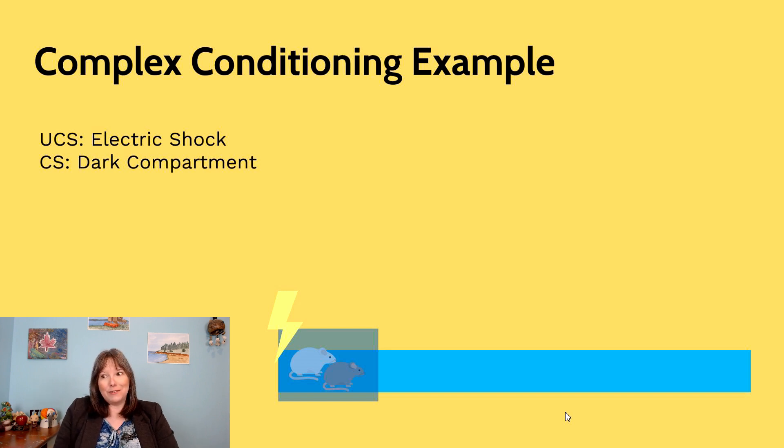And so now by pairing the shock with the dark compartment, that's classical conditioning. They're going to receive a shock there, they're going to map that on, and the dark compartment will no longer be neutral. It'll now be a conditioned stimulus. The rats are not going to like that.